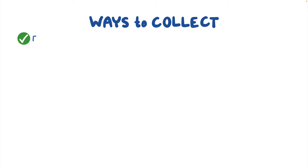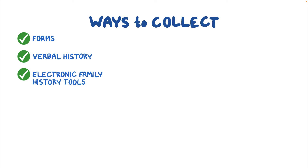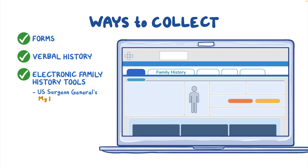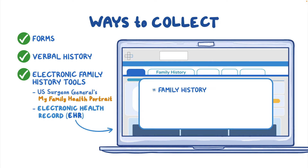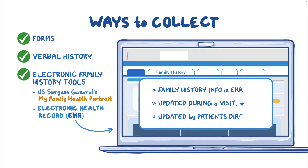There are different ways to collect family health history. Forms and verbal inquiries are two possibilities, but a general family history may also be obtained using electronic family history tools available for free to patients, like the U.S. Surgeon General's My Family Health Portrait, or tools from the Electronic Health Record, abbreviated EHR, itself. Family history information can be linked to a patient's EHR and updated during a visit, or, if accessible by patients directly, they can be encouraged to keep their information updated.